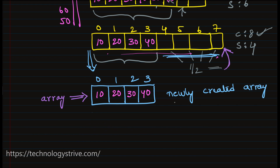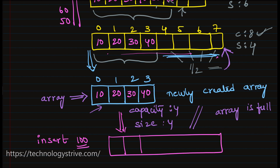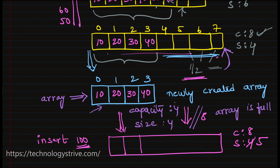Now the capacity is 4 and size is 4, so the array is full and we can't even insert any element. For example, if I get an insert operation — insert 100 — it has to create a new array with double the capacity, which is 8, and the size becomes 5. Notice that we just reduced the array size to 4 and immediately increased it back to 8. We are just reversing the operation because we decided that whenever half of the array is not filled, we shrink it — that's why we arrive at this situation. This is not ideal, because I just reduced the array size and immediately for the next insert, I have to increase it again.